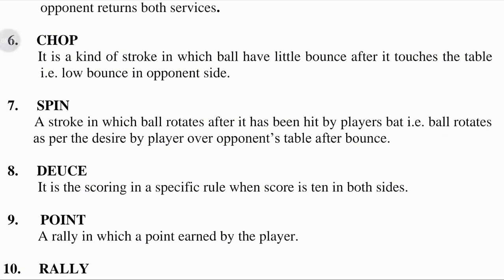Chop: the point of contact will vary depending on the topspin present on the ball. The more topspin on the ball, the lower it should be taken during a chop. It is a kind of stroke in which the ball has little bounce after it touches the table — that's a low bounce on the opponent's side. Against a loop, one must bend his knees in order to get low enough to return the heavy topspin.